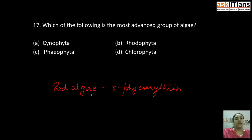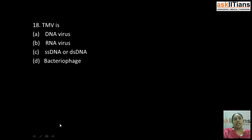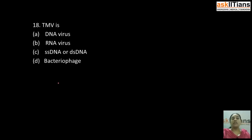Rhodophyta is also known as red algae. Red algae contains a characteristic pigment called r-phycoerythrin, which gives red algae its characteristic color. Our next question is: TMV is — A) a DNA virus, B) an RNA virus, C) single-stranded DNA or double-stranded DNA, D) bacteriophage. The correct answer is B: RNA virus. TMV is an RNA virus; it contains RNA as its genetic material.